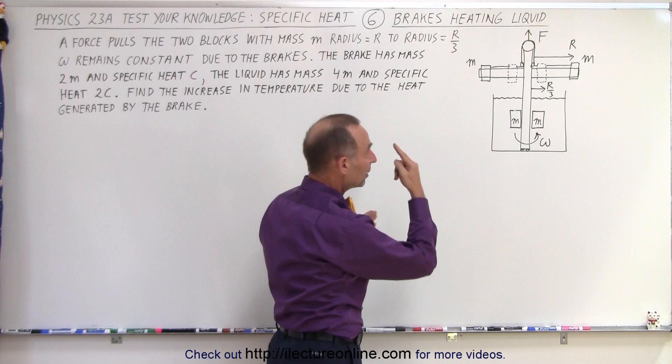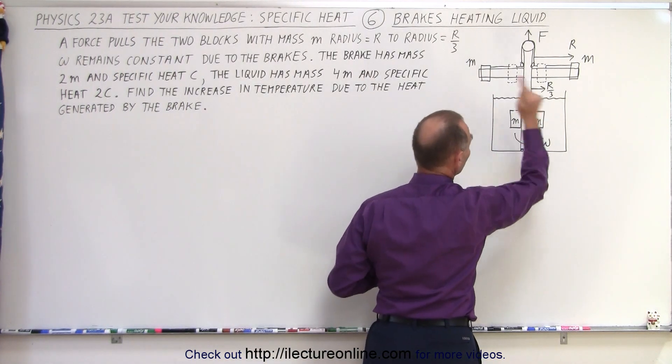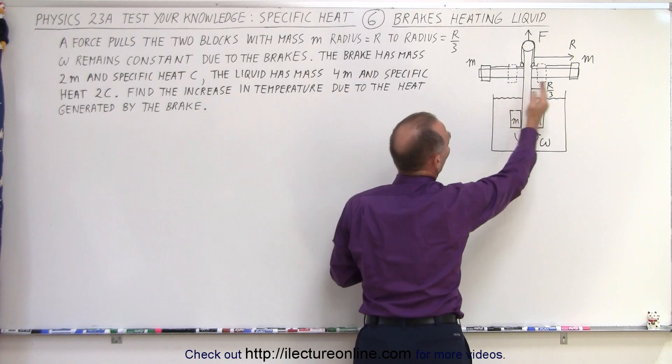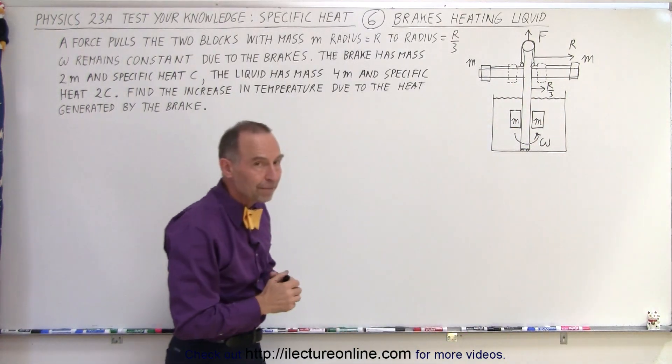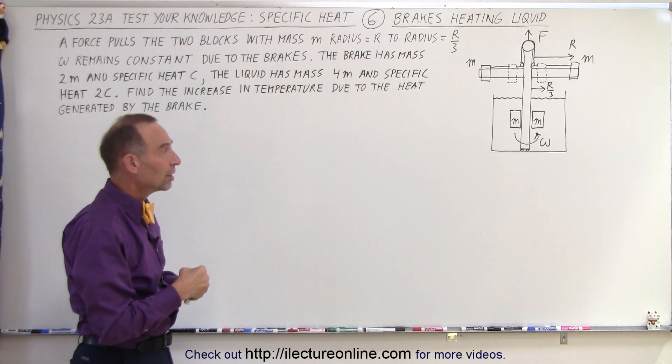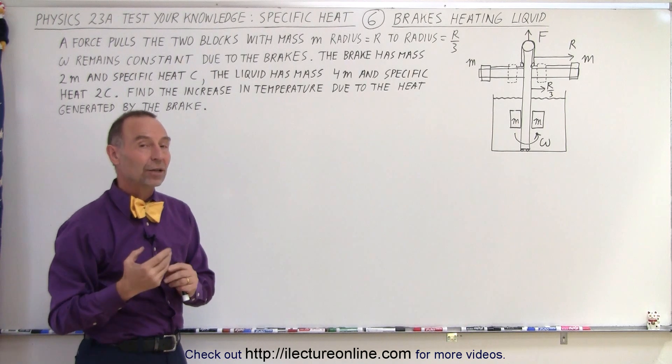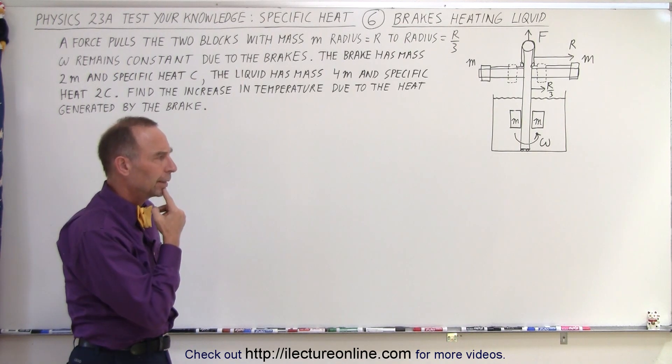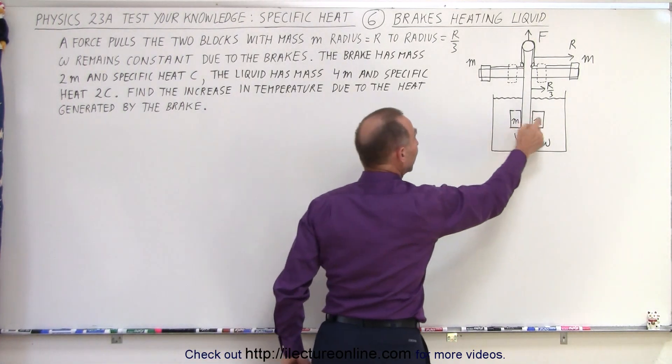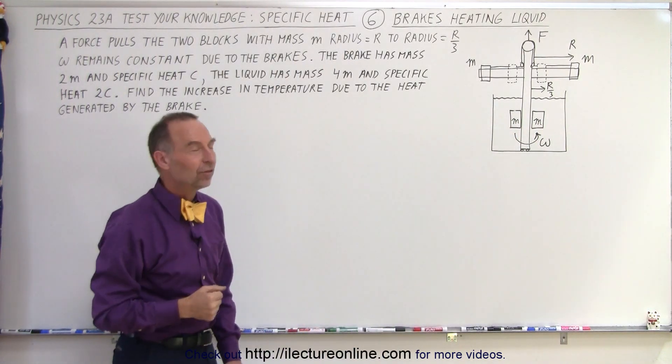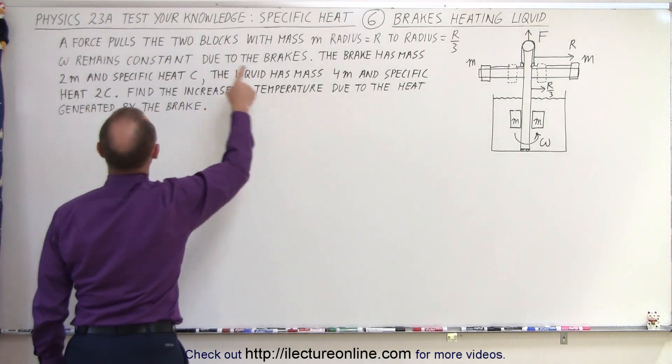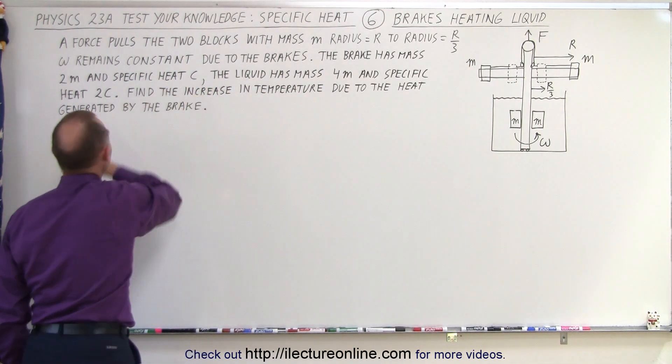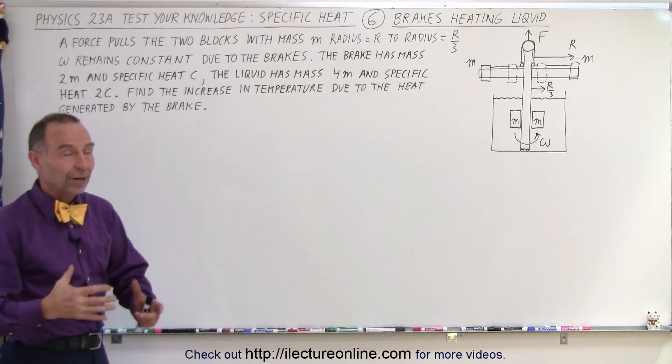We can pull up on the string and while the shaft is rotating, which means the mass is rotating as well at the rotation velocity omega, then we pull on the string and we pull the two blocks from a distance r to a distance r divided by 3. Now of course that is work done by pulling up the string, but we apply the brakes to keep the shaft from increasing in angular velocity. So we maintain the same angular velocity, thus removing energy out of the system. If that energy is used to heat up the brakes and the liquid in the container, what will be the increase in the temperature?